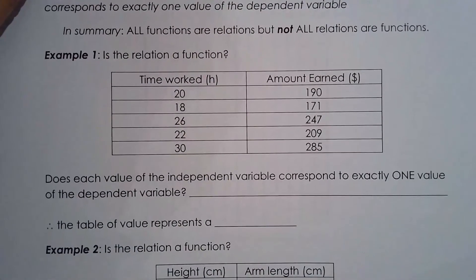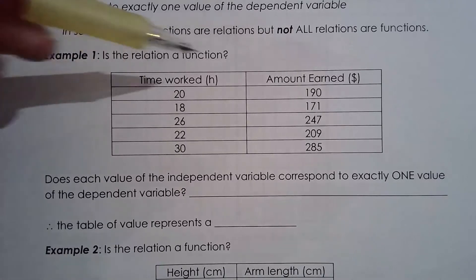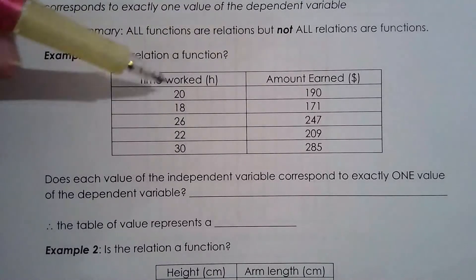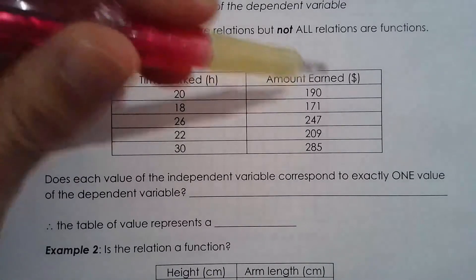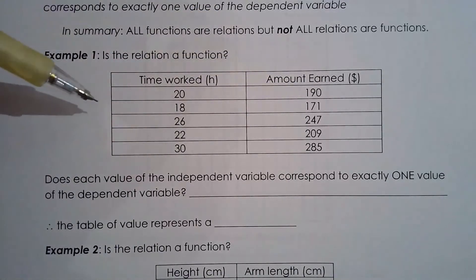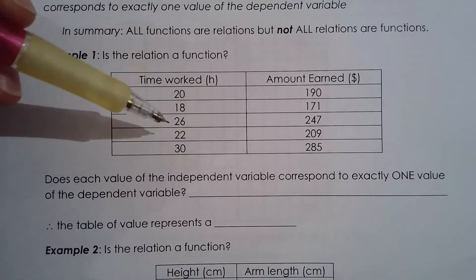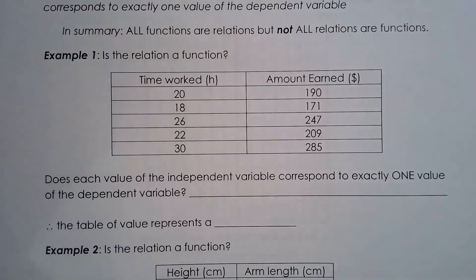Here we have a table where the two variables are time worked and amount earned. Time worked is the independent variable and amount earned is the dependent variable. You can also think of it as x and y — does each value of x give us one value of y? If that's the case, then our relation is a function.